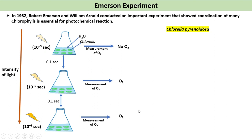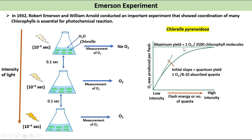This graph shows maximum yield of oxygen molecule is 1 per 2500 chlorophyll molecules. On further increasing light intensity there was no increase in oxygen molecule due to the saturation of chlorophyll molecules. So the conclusion of this experiment is 1 oxygen molecule was produced for each 2500 chlorophyll molecules.